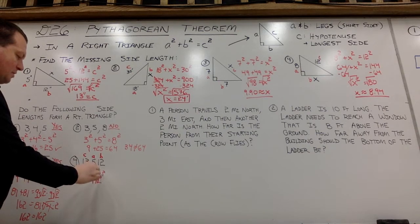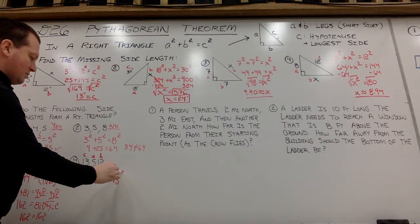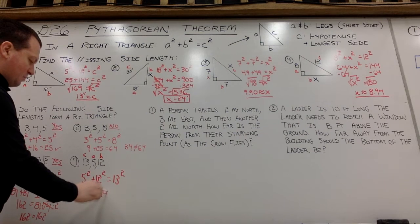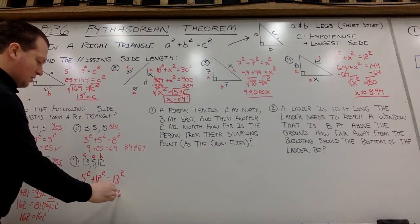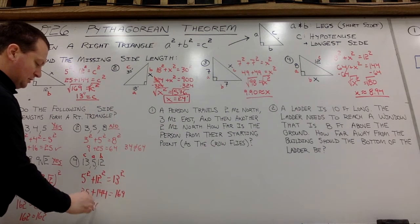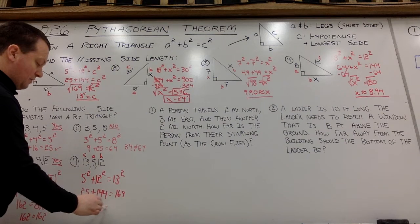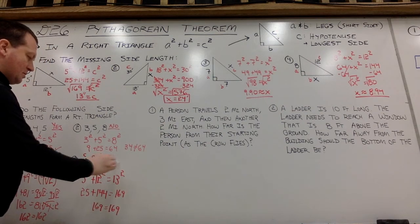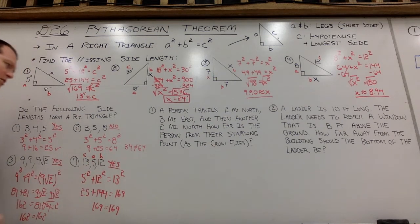So does 5 squared plus 12 squared equal 13 squared? 25 plus 144, 13 squared is 169. 25 and 144 also equals 169. So I would say yes for question 4.